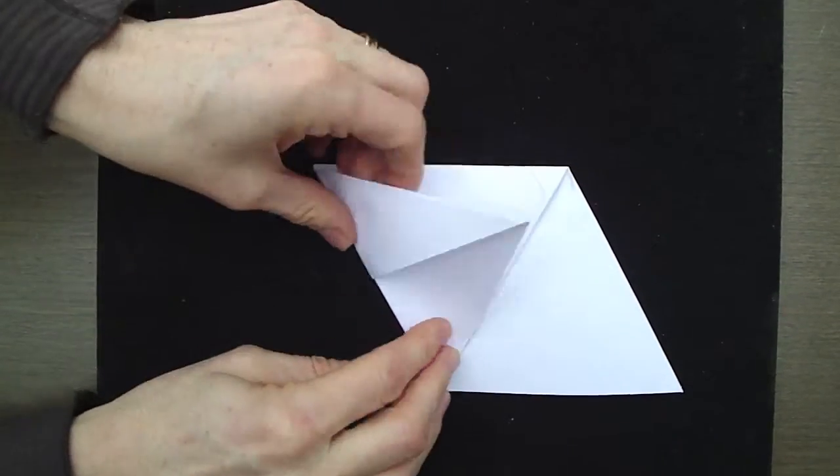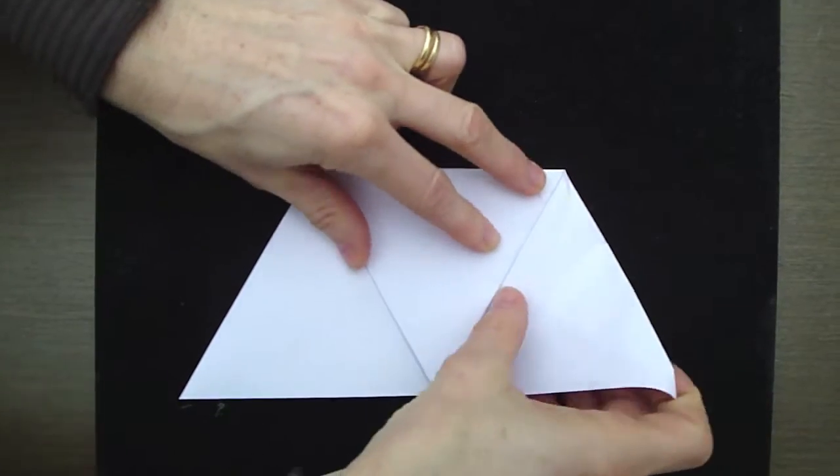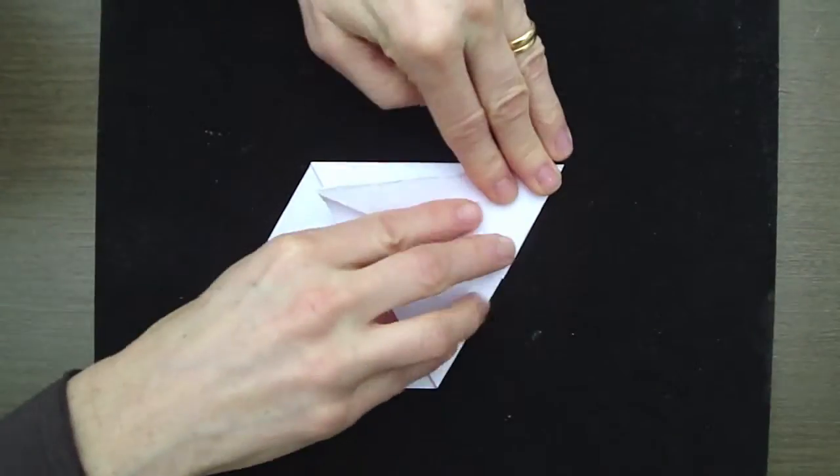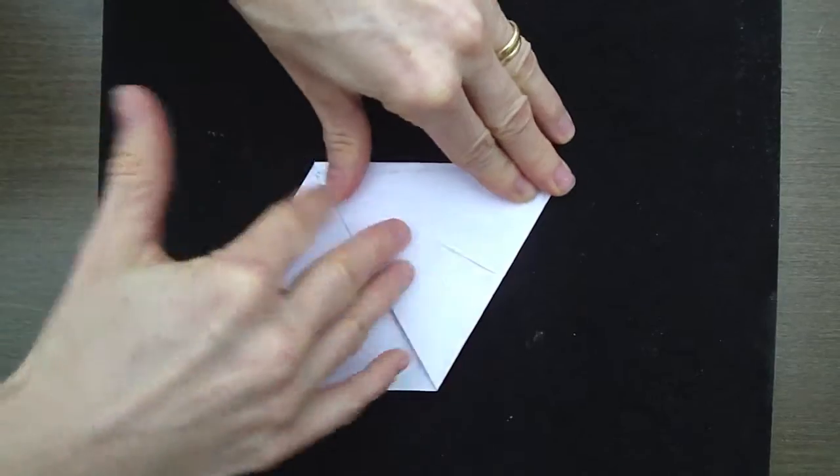Do exactly the same on the right hand side. Fold in the right hand corner across the middle. This is just to create the lines that you're going to use next.